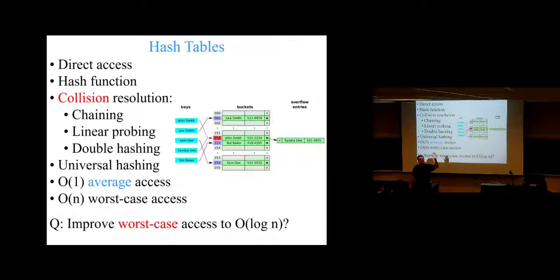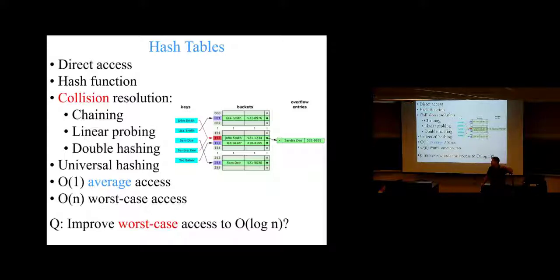So hash tables with this improvement will work better than height-balanced trees: the average will remain constant while the worst case will be no worse than log N. That's better than height-balanced trees, which are pretty darn good to begin with. Now solve that and we'll have something really interesting.